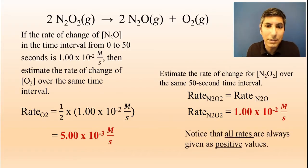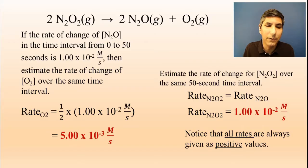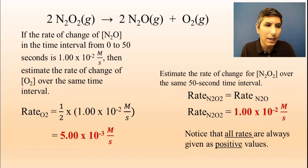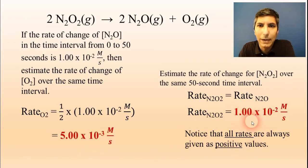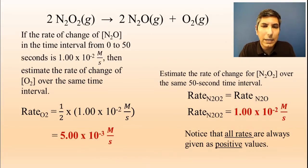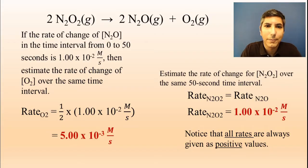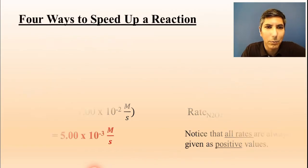Just so you know, all the rates we've looked at so far are positive values. In chemistry, by convention, we say that all rates are positive — we don't worry about negative rates the way physics might. It's like your car speedometer: if you put it in reverse and start driving, you're still proceeding at a positive rate. No one says you're going negative 50 kilometers per hour.